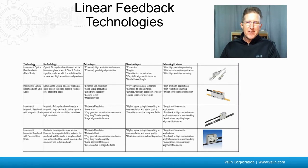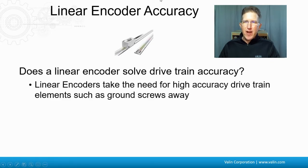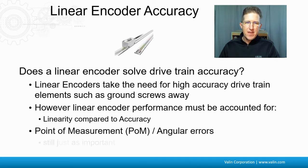In the last episode, I discussed different types of linear encoders: optical, magnetic, and inductive, and they each have their pros and cons. They also specify things differently. The question here is, does a linear encoder solve drivetrain accuracy? You would think yes, and it may. Linear encoders take the need for high-accuracy drivetrain elements such as ground ball screws away. However, the linear encoder performance must be accounted for — linearity compared to accuracy. The point of measurement and where you're measuring can really also matter, because then angular errors come into play.